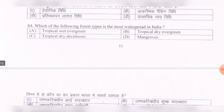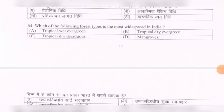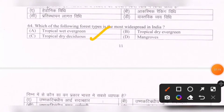Next question: Which of the following forest types is the most widespread in India? Options are: tropical wet evergreen, tropical dry evergreen, tropical dry deciduous, mangroves. The correct option is C — tropical dry deciduous.